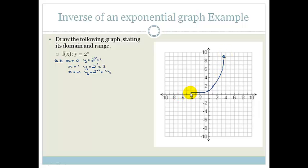And it gets closer and closer to the x axis but never cuts. That is our y equals 2 to the x. The asymptote is y equals 0 as we can see.